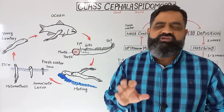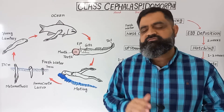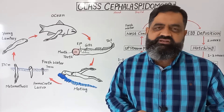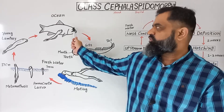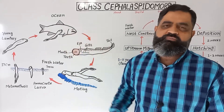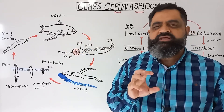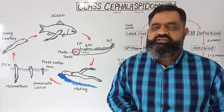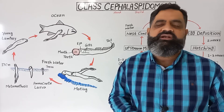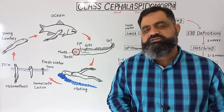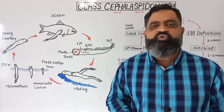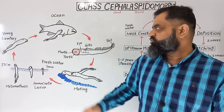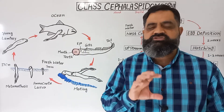When they become adult, after living one to two years in sea water and acting as a parasite, they attach onto any fish present in the ocean with the help of their suctorial mouth. Then they make a hole with their horny teeth on the surface of the skin of the fish. They then inject an anti-coagulant chemical inside the body of the host fish, which prevents blood clotting, and these fish can suck blood from the host fish.